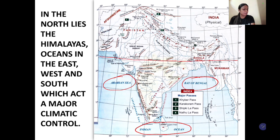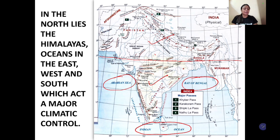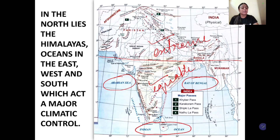Tropic of Cancer is passing through the center. Hamne discuss kiya ki northern part mein subtropical climate hai, or southern part pe tropical. Toh aisa kaha ja sakta hai ki southern part ka temperature kaafi zyada hona chahiye, kyoki wo equator ke nazdik hai. Lekin aisa nahi hai — north or south India mein temperature mein zyada variation nahi hota. Reason is the oceanic influence. South India ocean ke influence mein aata hai, it experiences maritime or equable climate. Jabki north India extreme climate experience karta hai, jisko hum kehtey hain continental climate.